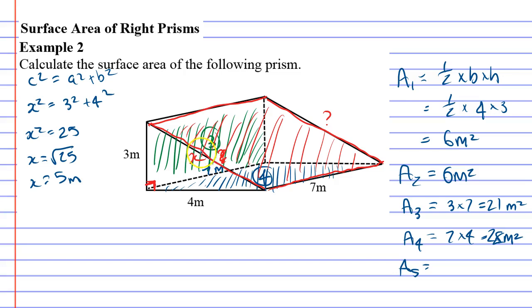So that's what x is there, which means that our rectangle here is a 7 by 5 metre rectangle. 7 times 5 is 35 metres squared.